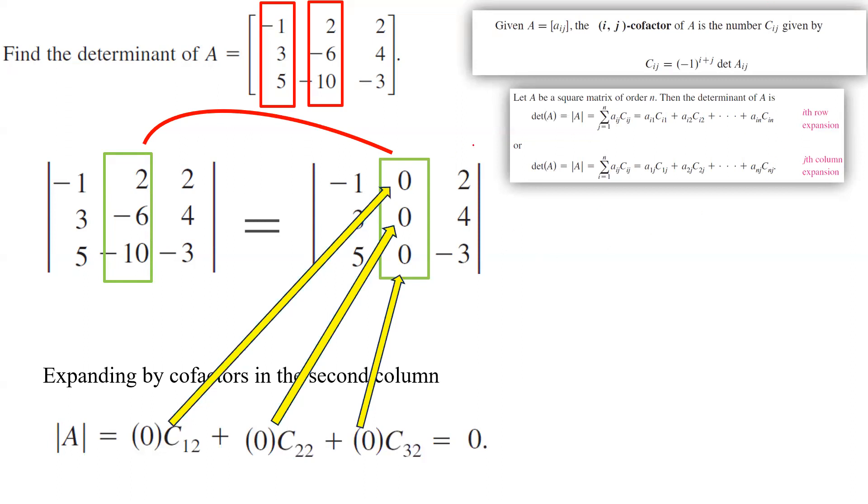Or you could say that, hey, since I have a zero column, the determinant of the matrix must be equal to zero.